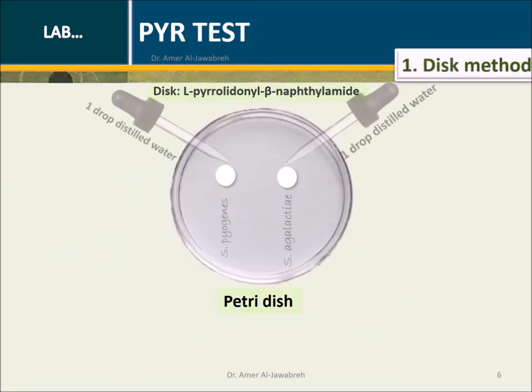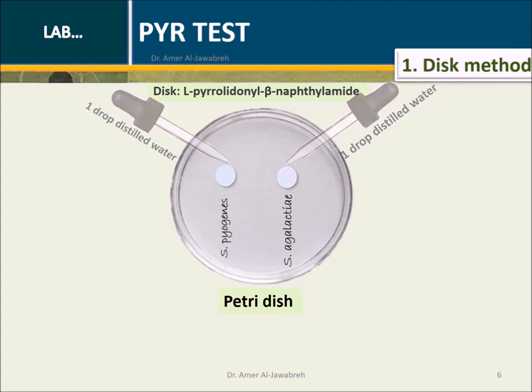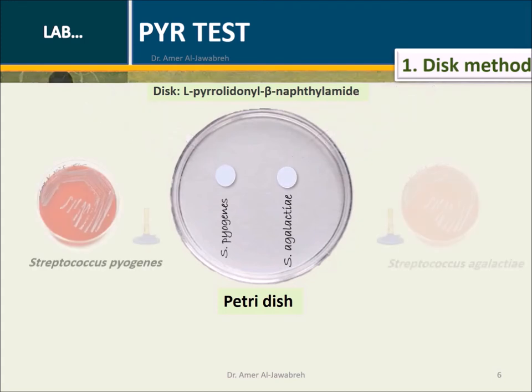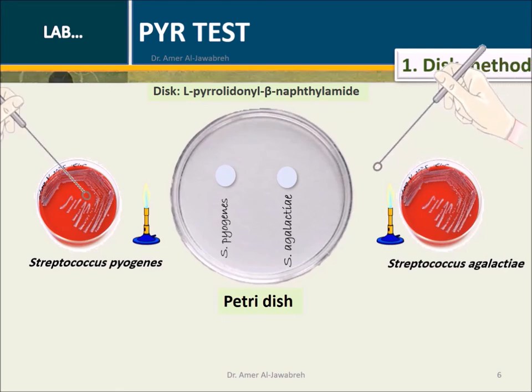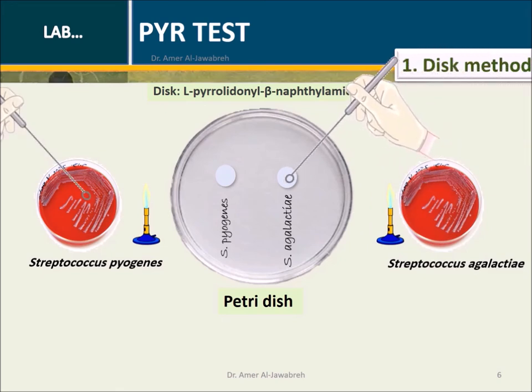Disc Method: Wet PYR discs by adding one drop of distilled water — do not flood. From fresh cultures, smear two to three isolated colonies on each wet disc.